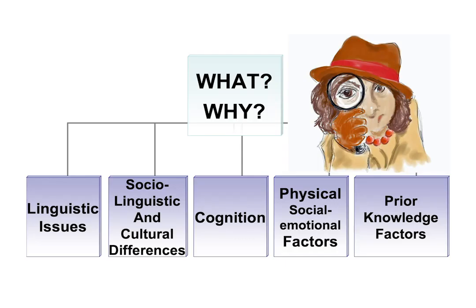It could be a linguistic issue — phonological, morphological, syntactic, or semantic. It could be sociolinguistic and cultural differences where what the child brings to school doesn't match what the school expects. It could be cognition, intellectual disability, attention issues like ADD or ADHD, memory — short or long term — or executive function problems. It could be physical factors: the child needs hearing aids, glasses, or to sit at the front. It could be mental illness, trauma, family issues, or prior knowledge gaps.